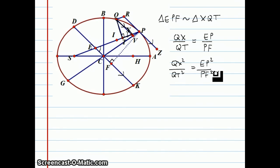Now, established way before, in his first proportion, he's already established that EP is equal to CA. So now I can rephrase this proportion as QX squared over QT squared equals CA squared over PF squared.